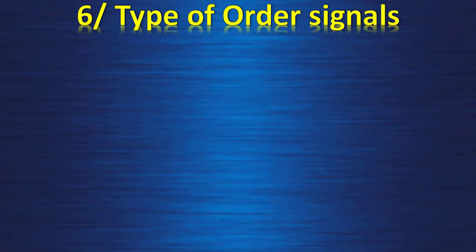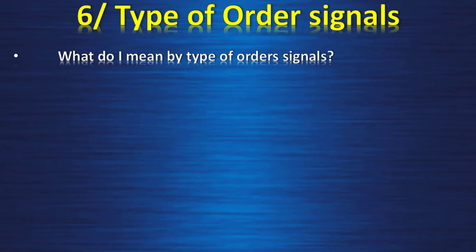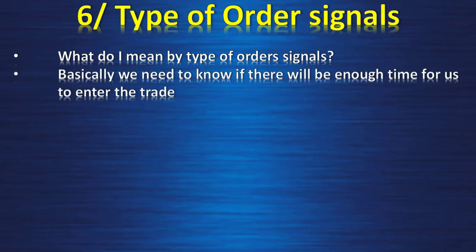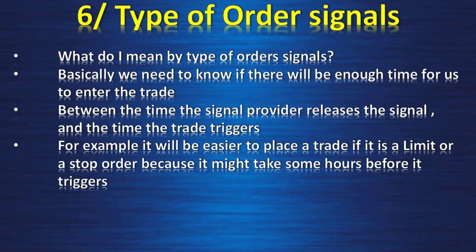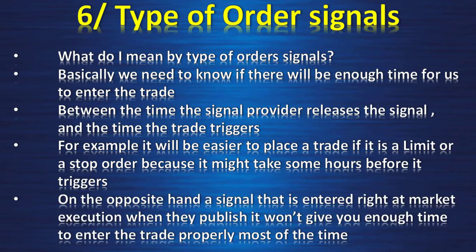Type of order signals: you need to know if there will be enough time to enter the trade between when the signal is released and when it triggers. It is easier to place a trade if it is a limit or stop order, because it may take hours before it triggers. On the other hand, a signal entered at market execution when published won't give you enough time to enter properly most of the time. If the provider publishes only market execution trades, you might miss many trades.